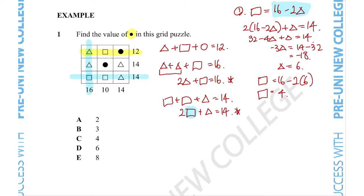Then since we know the value of the triangle, we can then use this first equation to figure out the answer. The triangle is equal to 6 plus the square, which is equal to 4 plus the circle equals 12. So clearly the circle must equal 2. So the correct answer option would be option A.